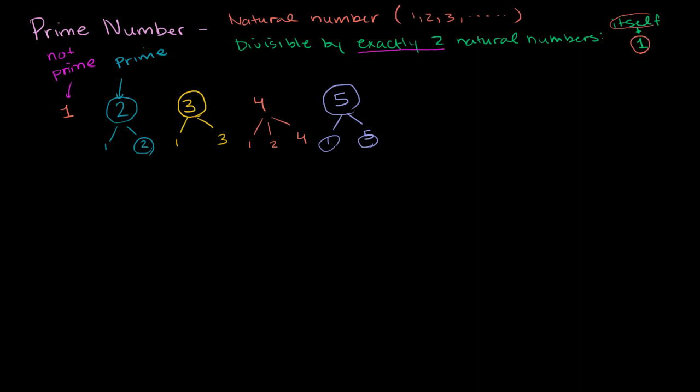Let's keep going. So let's try the number 6. It is divisible by 1, by 2, by 3, not 4 or 5, but it is divisible by 6. So it has 4 natural number factors, I guess you could say it that way. And so it does not have exactly two numbers that it is divisible by. It has 4, so it is not prime. Let's move on to 7. 7 is divisible by 1, not 2, 3, 4, 5, or 6, but it's also divisible by 7. So 7 is prime.